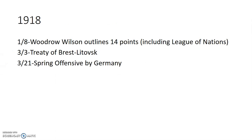In 1918, Woodrow Wilson, the President of the United States, outlines his 14 points to try to make sure that nothing like this war can ever happen again. This includes his idea of the League of Nations — an early precursor to the United Nations — so that nations can talk out and mediate issues with all countries involved, as opposed to secret alliances deciding to declare war.